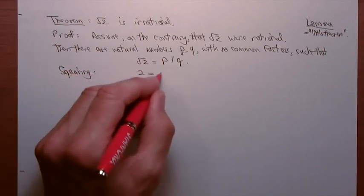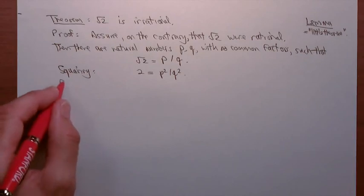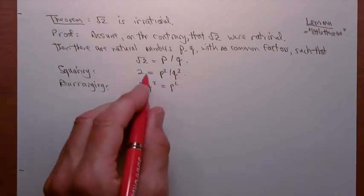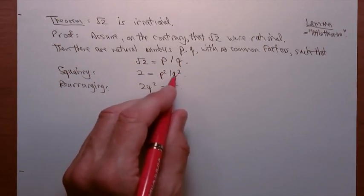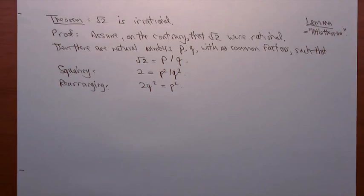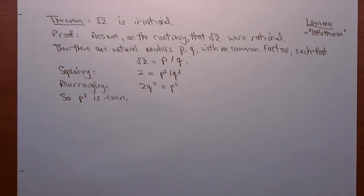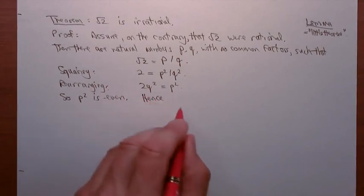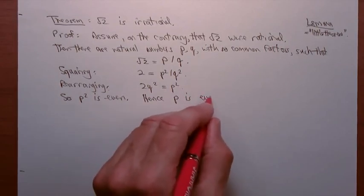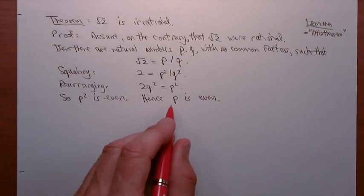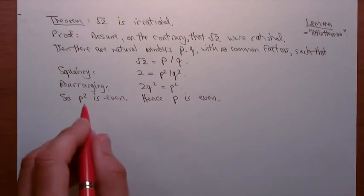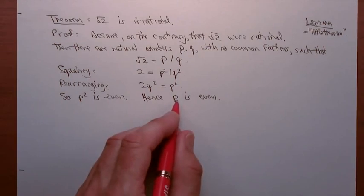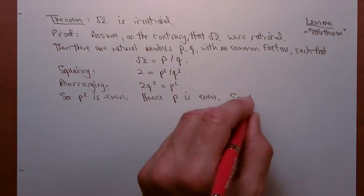Squaring that equation gives 2 = p²/q². Rearranging, I get 2q² = p². So p² is even — it's equal to twice something. Hence, p is even. Why? Because the square of an even number is even, and the square of an odd number is odd. So the only way p² could be even is if p itself is even. So p = 2r for some r.